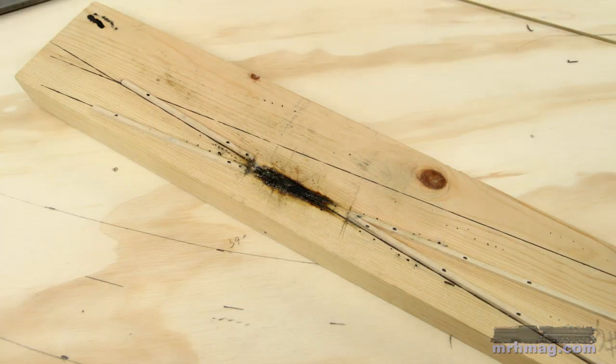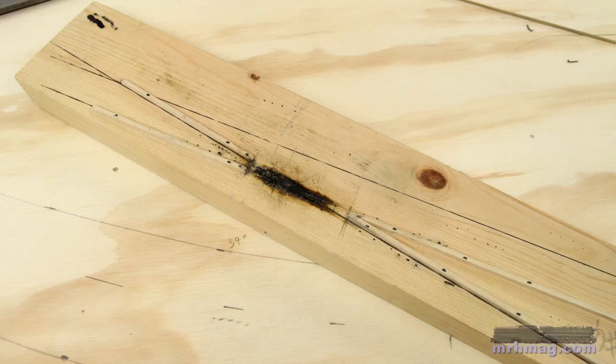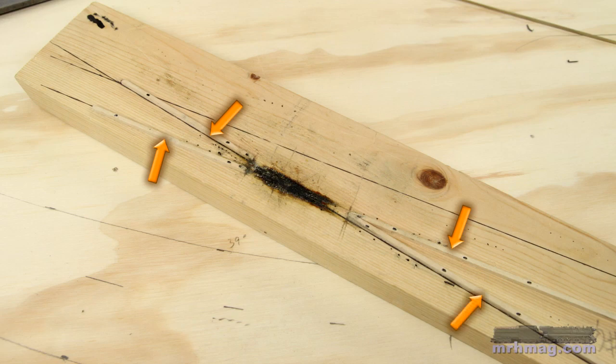When I'm building a standard straight leg turnout, I use a simple jig to hold the frog enclosure rails at the correct angle. For a number six frog, I draw a straight line on a piece of one by four pine. Then I mark the frog point location and measure six inches along the line, then over one inch, and draw another line forming a one and six angle. Four strip wood guides are spiked and glued to the pine to hold the frog enclosure rails in place.